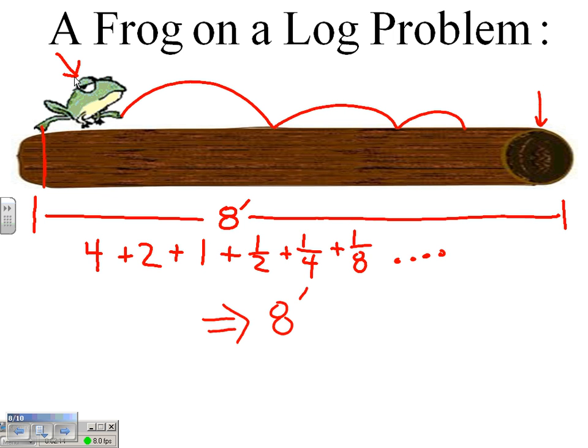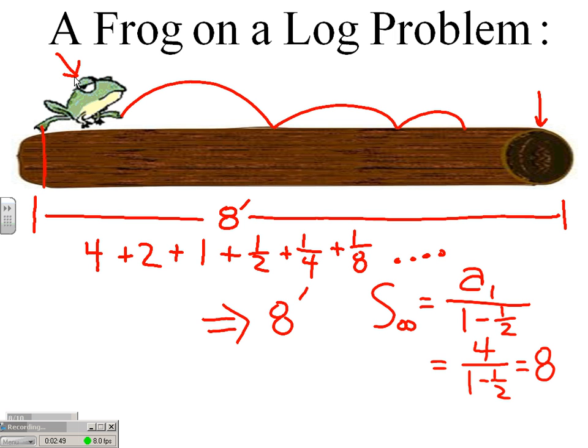That ties into our formula for an infinite sum, which says the sum of an infinite sequence, sum of infinity terms, is the first term, or in this case the first jump, over one minus the ratio. In this case, each jump is half as far as the previous jump. Our frog's first jump is four, over one minus one half, and that equals eight.